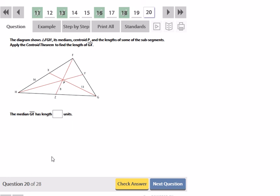Here again, we're applying centroid theorem, and they want us to know the distance, G to X, which is the length of that entire median. Well, they're giving us the distance from the centroid to the angle, so the distance from the centroid to the side is half of that, half of 13 is 6.5. So, 6.5 plus 13, if I add them together, gives me 19.5.